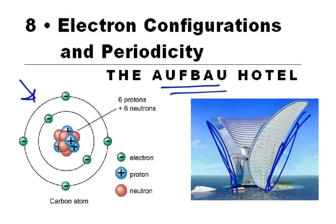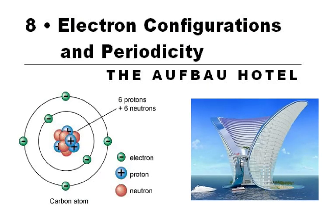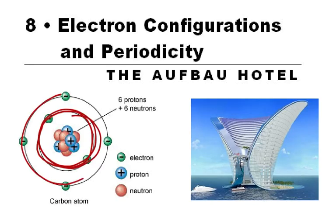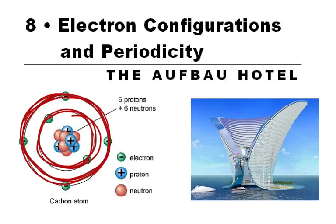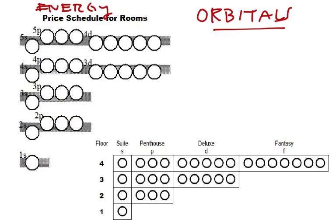Going back to the first image: we've always learned that electrons kind of orbit the nucleus — that's not the most sophisticated model, but it works for a lot of things. Instead of being an orbit like a planet orbits the sun, we call those orbitals. So each of these little orbitals — the 1S, the first floor suite — is a room in our analogy, but it's really an orbital. The orbitals are the rooms.